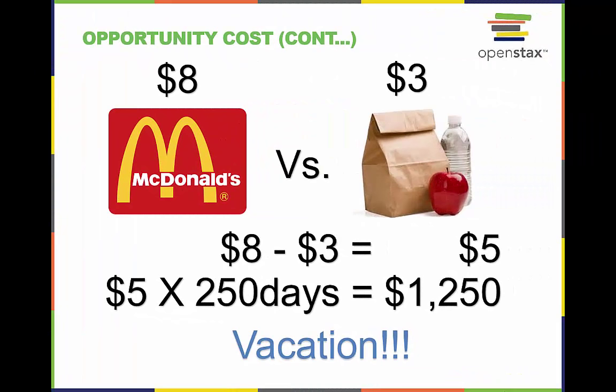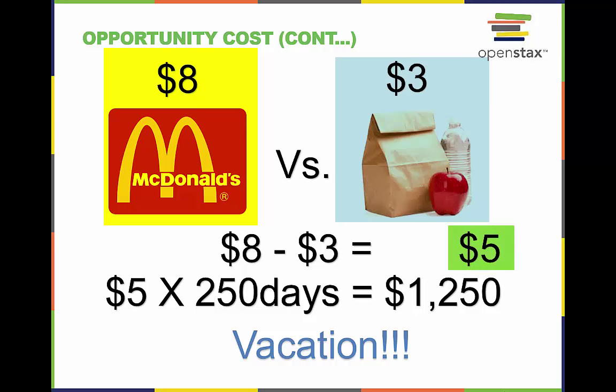Let's expand on the concept of opportunity cost with a common decision: do I pack a lunch for work or do I eat out? In this scenario, eating out costs $8 and bringing a lunch from home costs $3. The opportunity cost for eating out is $5, which is the difference between the options — 8 minus 3. At first, $5 may not seem like a big deal, but if we did it consistently for a year, the costs add up to $1,250 — the price of a nice vacation.